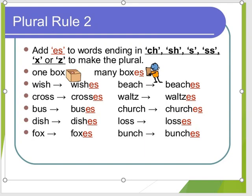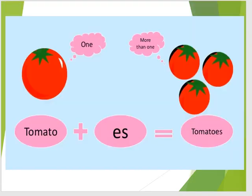Wish — as it ends with SH, we add ES. Here is one tomato and it is a singular noun, but as it ends with O, we add ES, not S. And we form our plural noun: tomatoes.